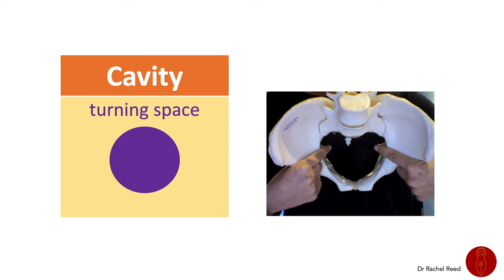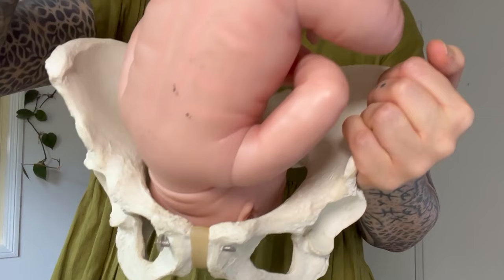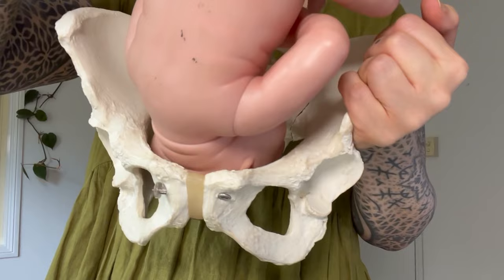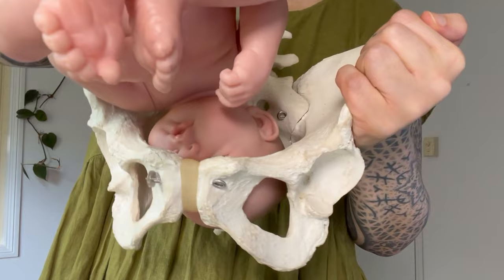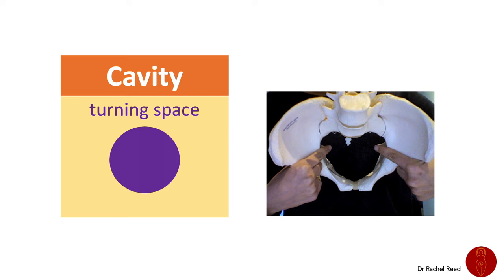Once in that turning space, some babies do lots of turning. For example, a baby who enters OA may rotate to OP and back again. Some rotate 360 degrees, some 190 degrees. So you get the picture — there's a lot of turning that is possible once the baby gets into that part of the pelvis.